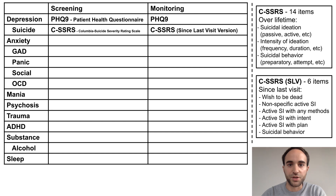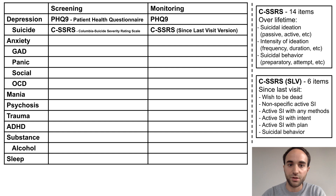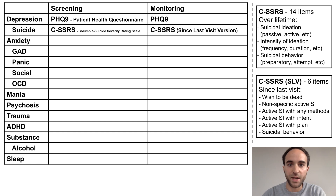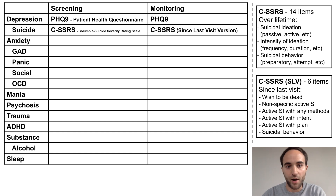For suicidal ideation, the complete form of the CSSRS is a comprehensive review of suicidal ideation, intensity of ideation, and suicidal behaviors over the lifetime. The since-last-visit version of the CSSRS can then be used to monitor the intensity of suicidal ideation over time.